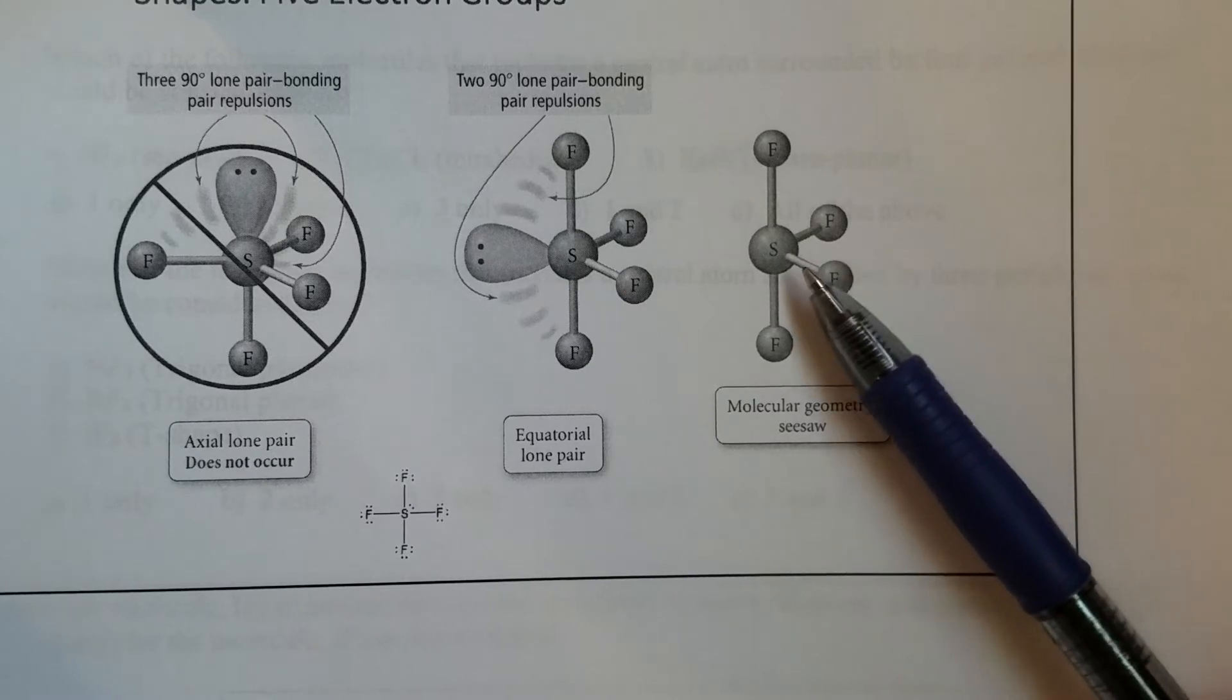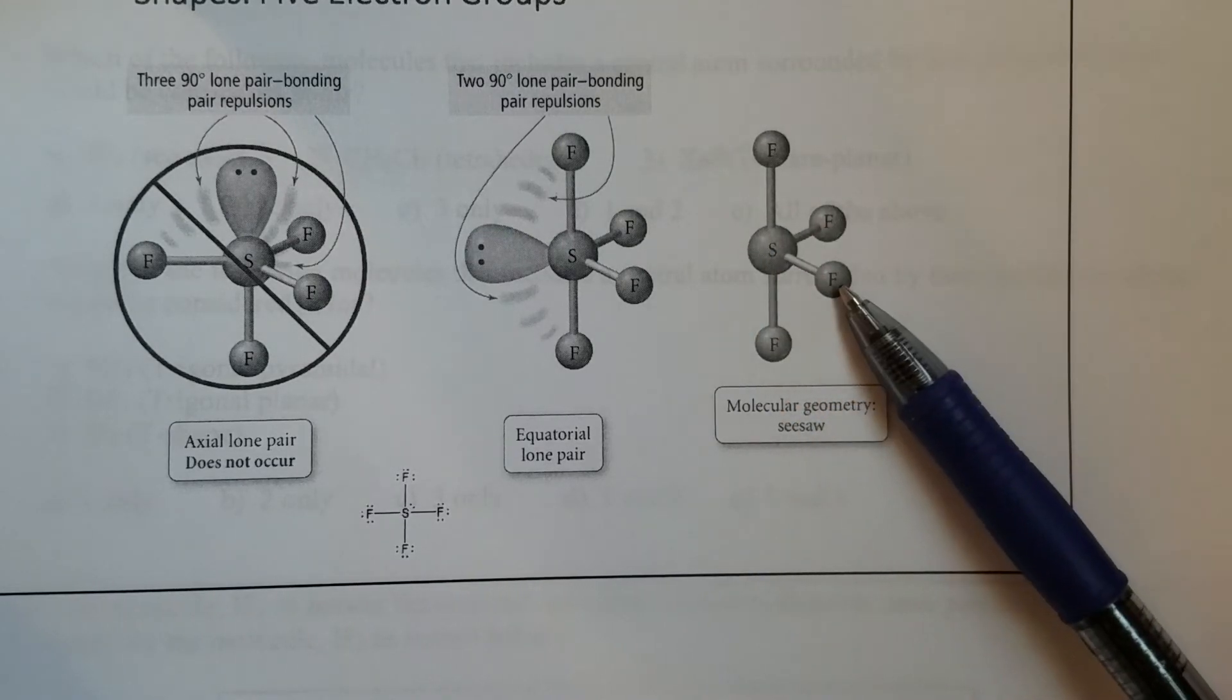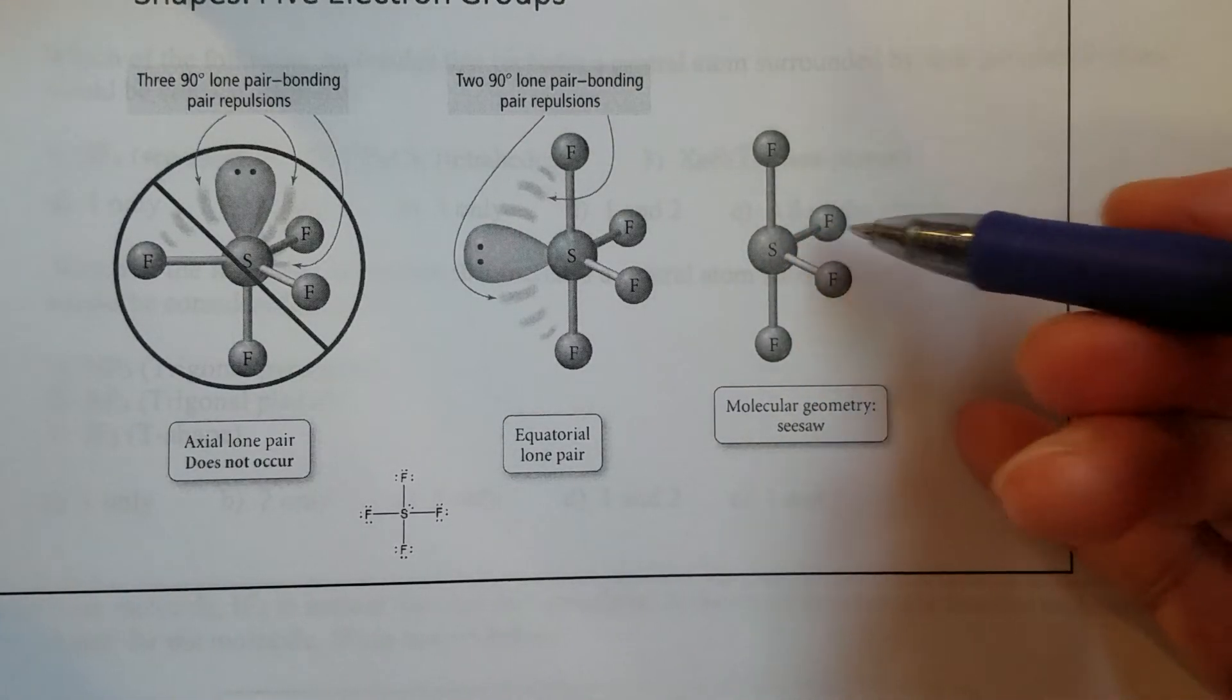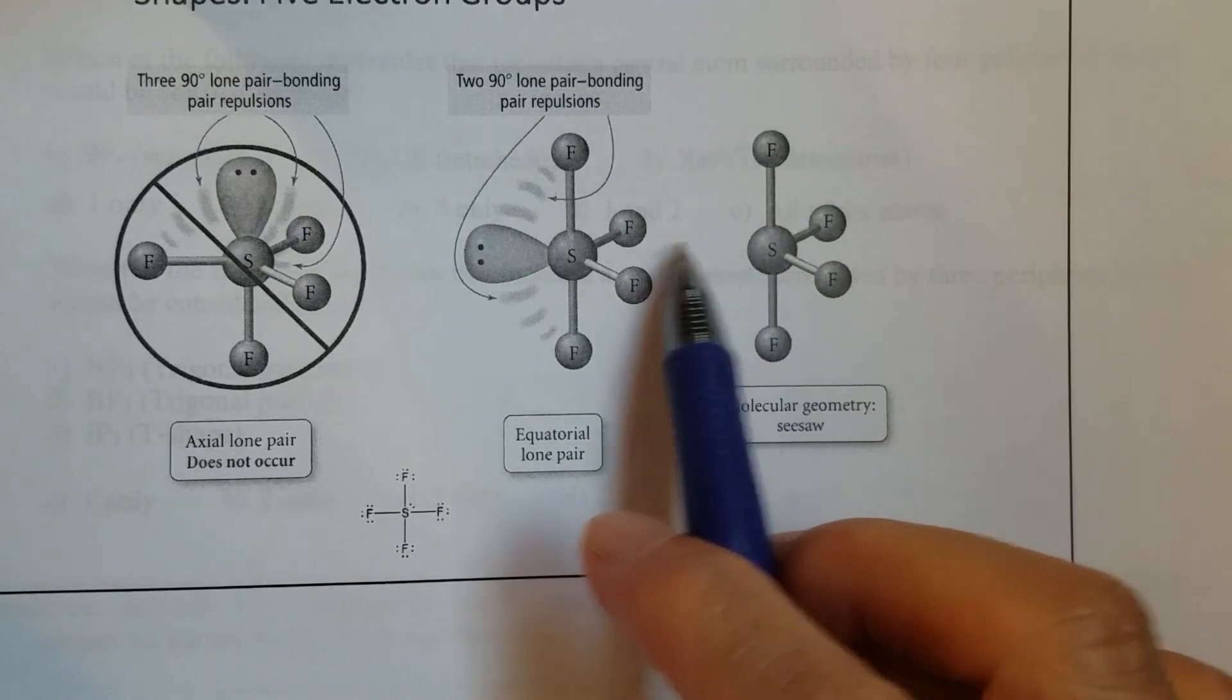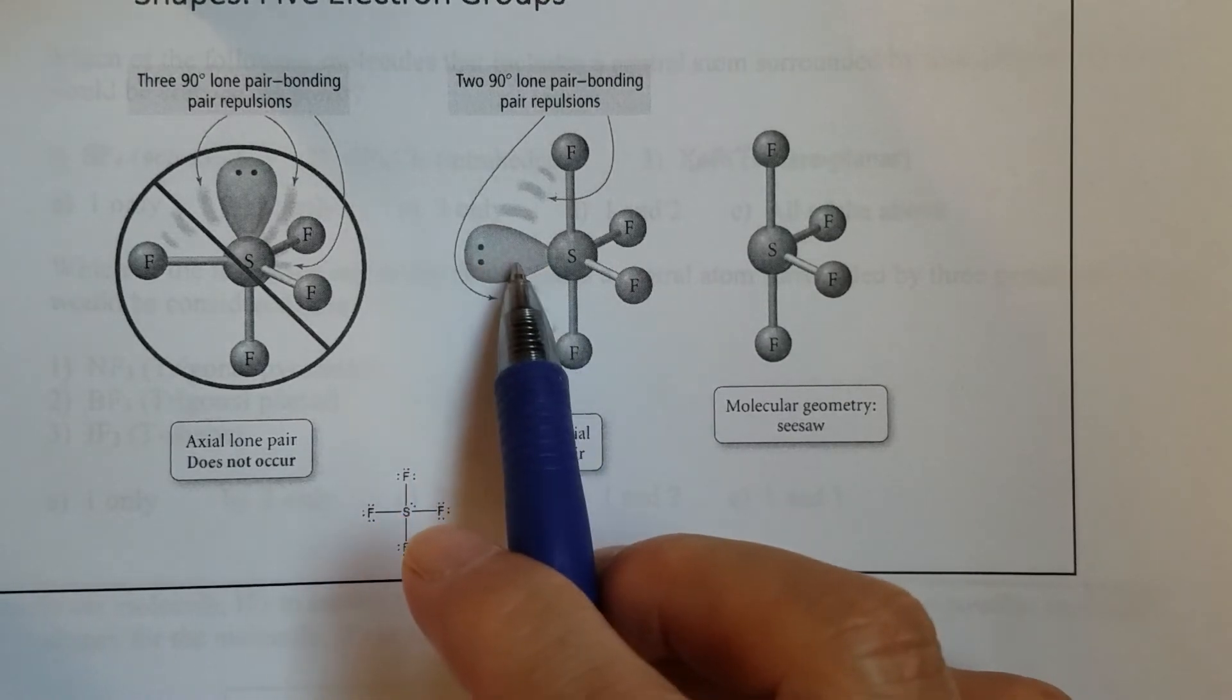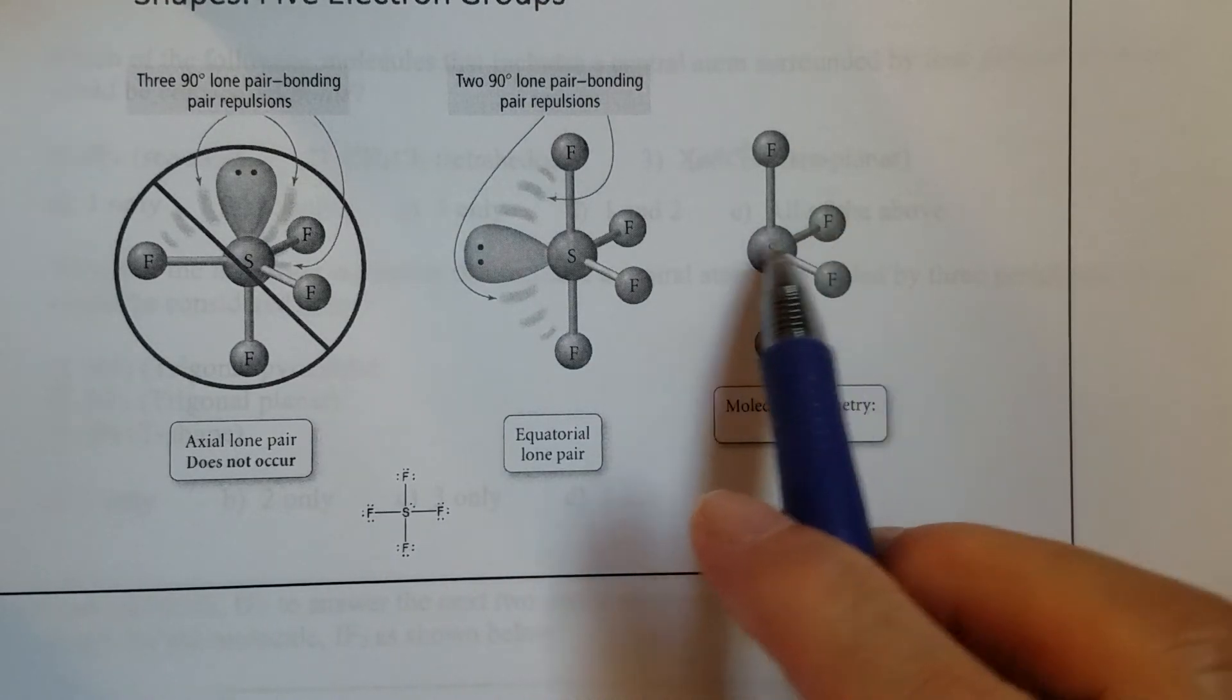Because those bonds are polar bonds, those two dipole moments cannot be cancelled because there is no right here. You see, there's no another fluorine atom. There's no bonding. So therefore, the dipole moments cannot be cancelled. That's why this one is polar.